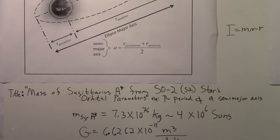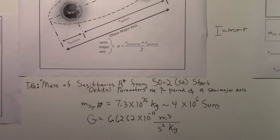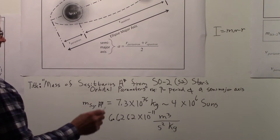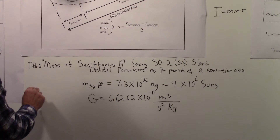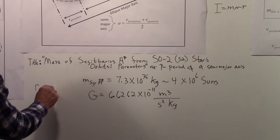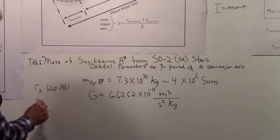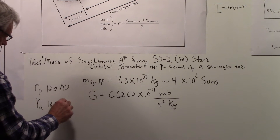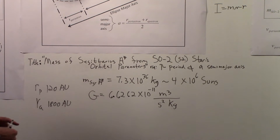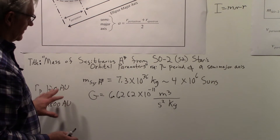The distances we need are: the closest point, periastron, is about 120 astronomical units, and the furthest point, apastron, is about 1800 astronomical units. When doing the calculation, those numbers will be converted to meters.